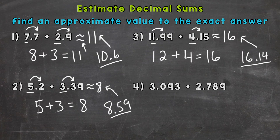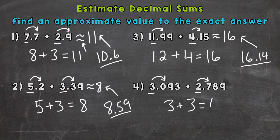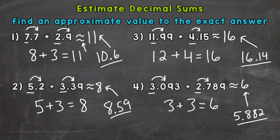Number 4: we have 3 and 93 thousandths plus 2 and 789 thousandths. Let's round to the nearest whole number. 3 and 93 thousandths rounds to 3, plus 2 and 789 thousandths rounds to 3 as well. So 3 plus 3 gives us an estimate of 6. The exact answer is 5 and 882 thousandths. We can compare and see that our estimate is very close to that exact answer — we got an approximate value through our estimation.